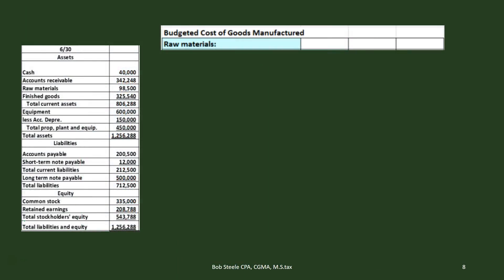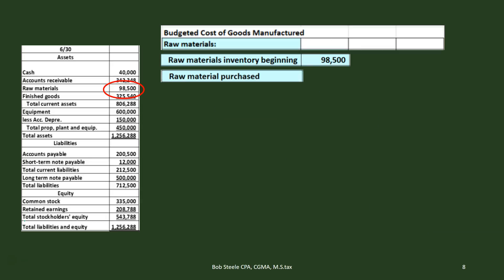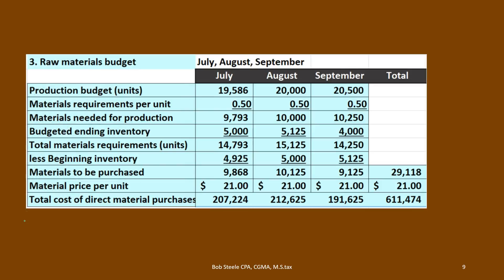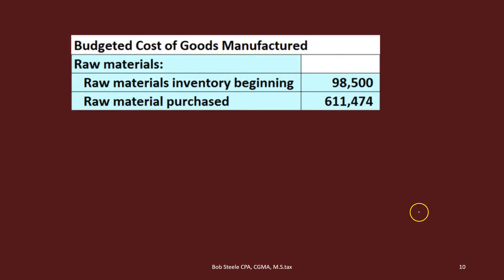Here we have the cost of goods manufactured. We're going to start off with raw materials, pulling the beginning raw materials from the prior period balance sheet. Beginning raw materials will be the same as ending raw materials in the prior period. Then we have the raw materials we're going to purchase — we figured that out in the raw materials budget, and we came out to raw materials purchases of $611,474. That's what we're going to put in for purchases.